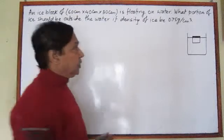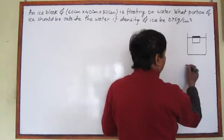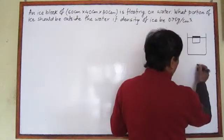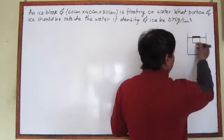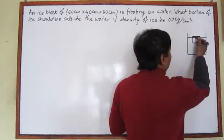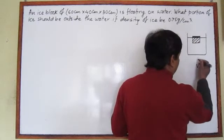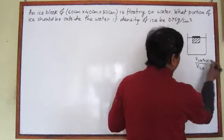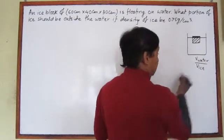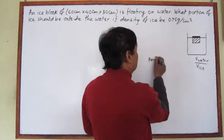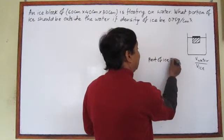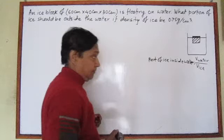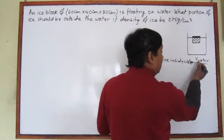To solve this, we need to know the total volume of ice and the volume of ice inside the water. The volume inside the water can be taken as the volume of displaced water. If we take the ratio of these two — volume of displaced water to total volume of ice — we get the part of ice inside the water.